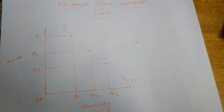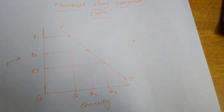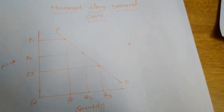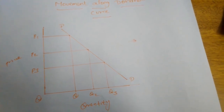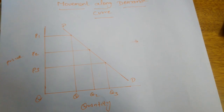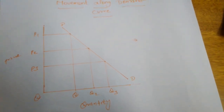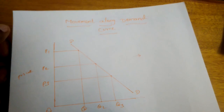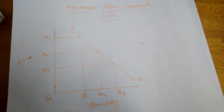Whenever the price of the commodity changes, the demand for that commodity will increase or decrease. We also studied other determinants of demand. If the quantity demanded is changed on the basis of price alone, that is called extension and contraction of demand — meaning the increasing and decreasing of demand only by reason of the price of that commodity.